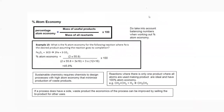Next is percentage atom economy. What is it and how is it calculated? Atom economy equals the mass of the useful or desired product divided by the total mass of reactants or products, multiplied by 100.